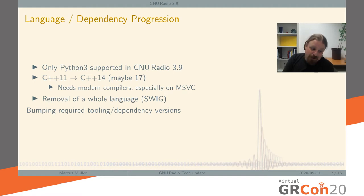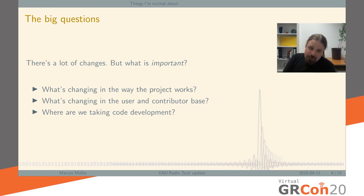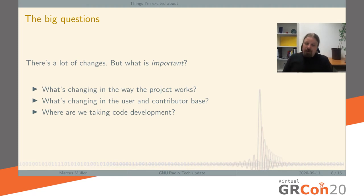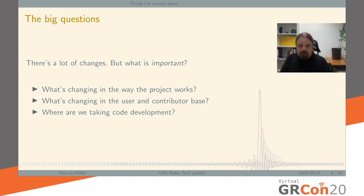But is that really what I should be talking about? I'll write a changelog when we release 3.9 covering basically everything I said. What I really want to address are three categories: what's changing in the way the project works and produces code; what's changing in the users and contributor base; and where are we actively taking code development and where does it lead in the near future?